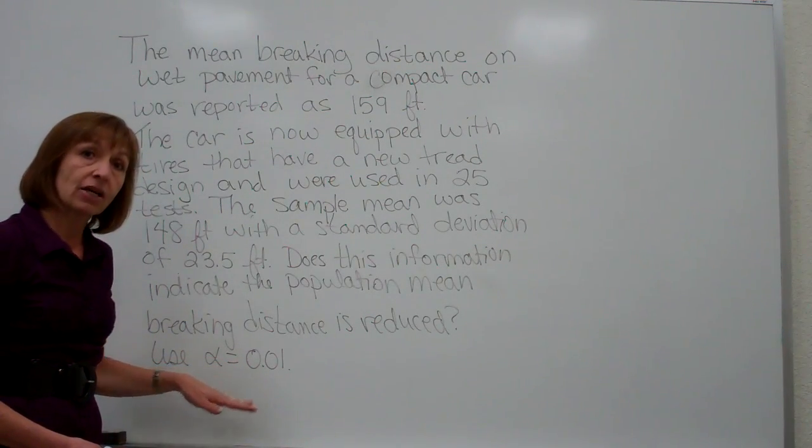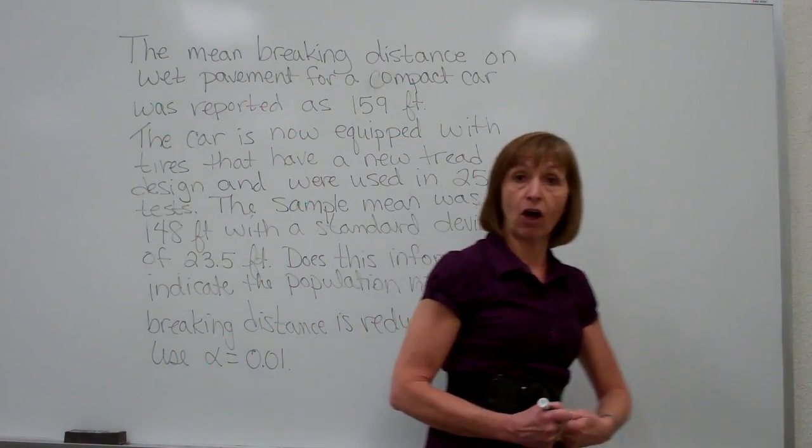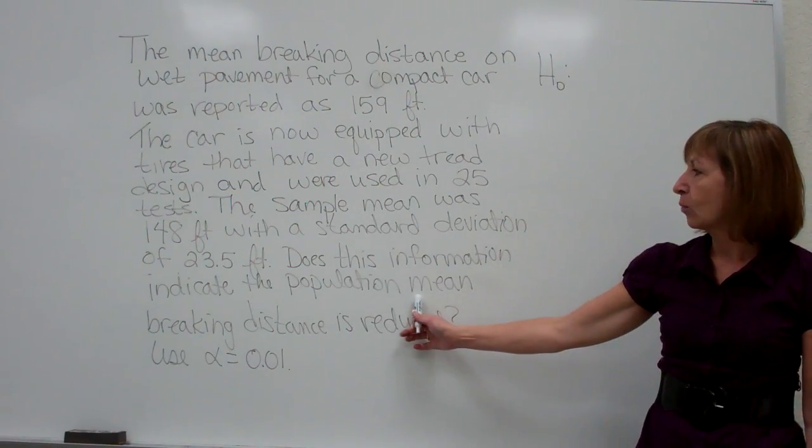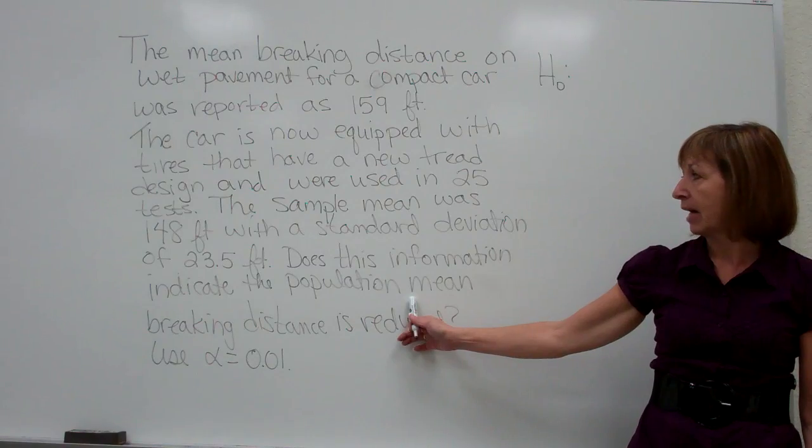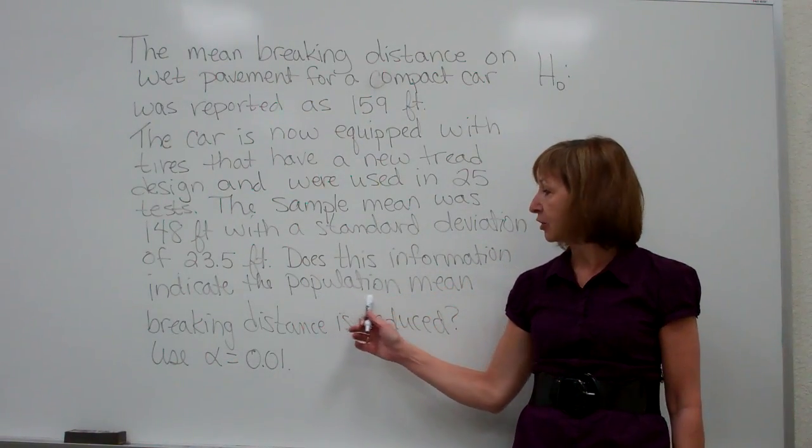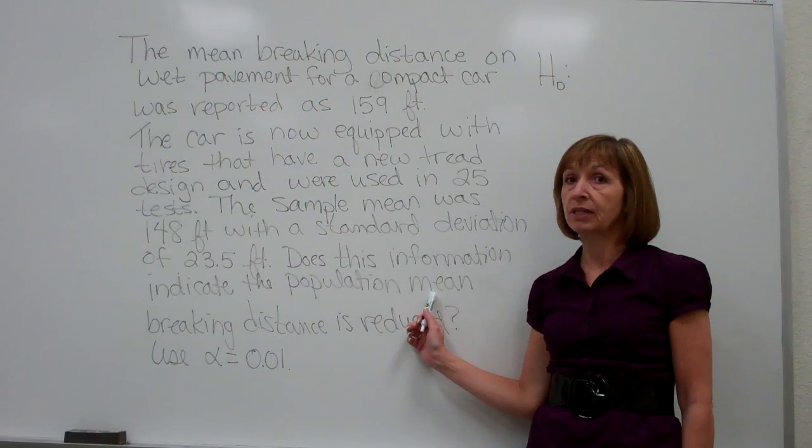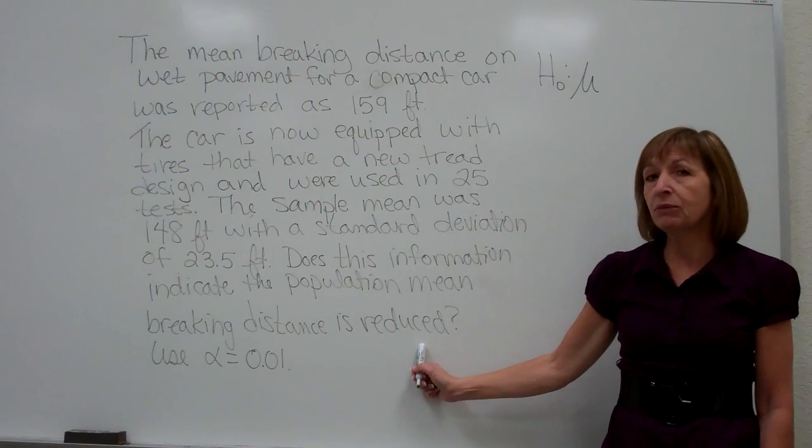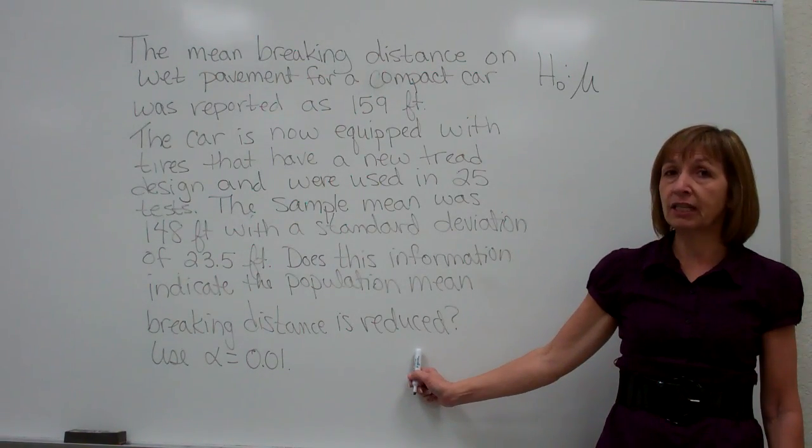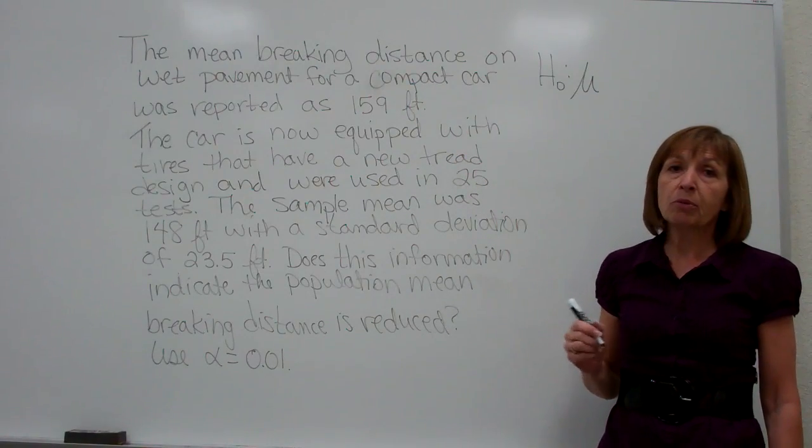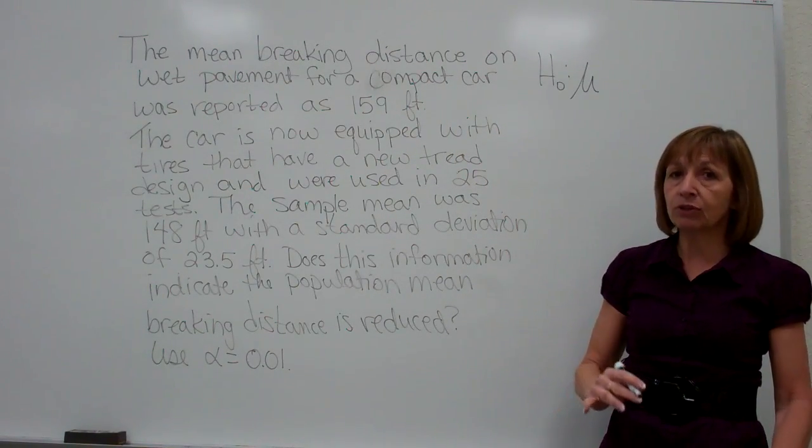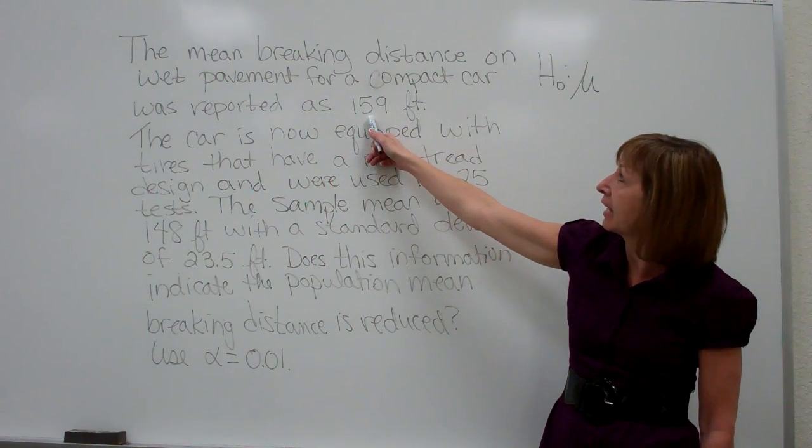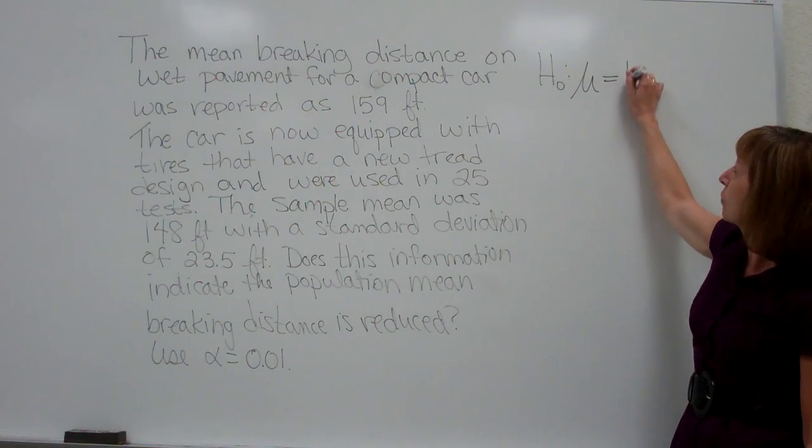Now because it's a hypothesis test, the first thing I want to do is set up the null and the alternate hypothesis. The null hypothesis is looking at what population parameter they're asking about. Does this information indicate that the population mean mu has been reduced from what it originally was? But remember in the null hypothesis, we want to have it equal to whatever. So originally we had it as a reference number of a mean of 159 feet. So our null is mu equals 159.